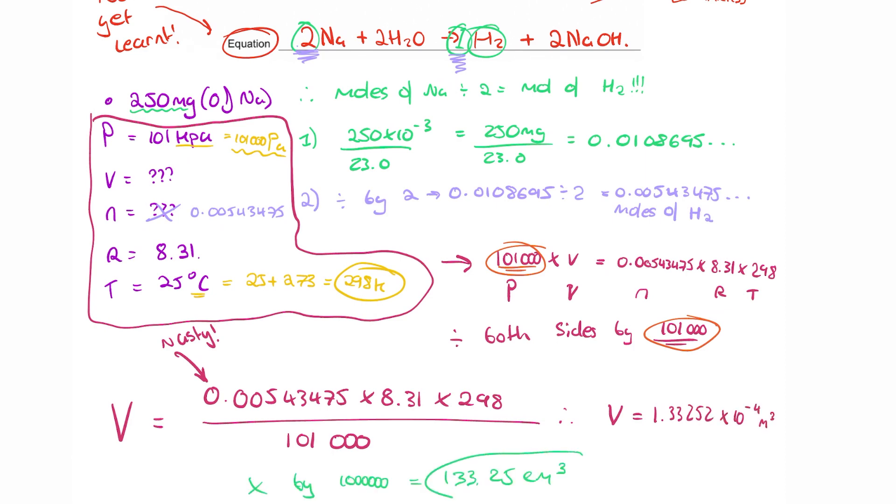Volume has to be in centimeters cubed, so we use the conversion factor we just learned, which is times by a million, and we end up with the final answer of 133.25 centimeters cubed. That is as complicated as PV equals NRT gets. If you feel like you need more practice, you can just head over to our website, which is linked in the description below.